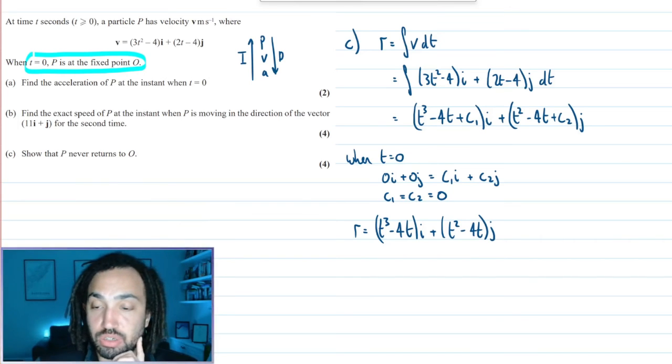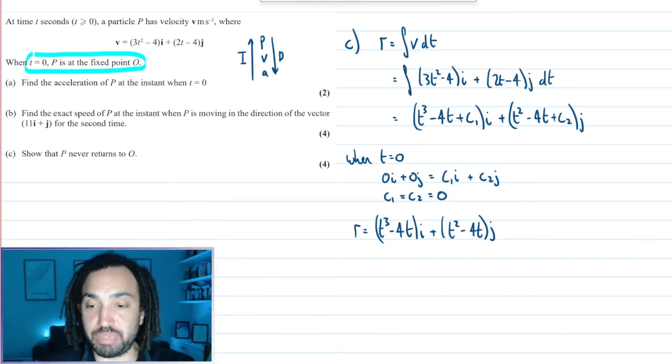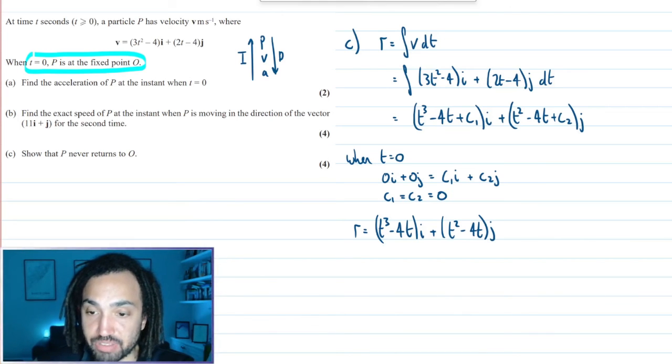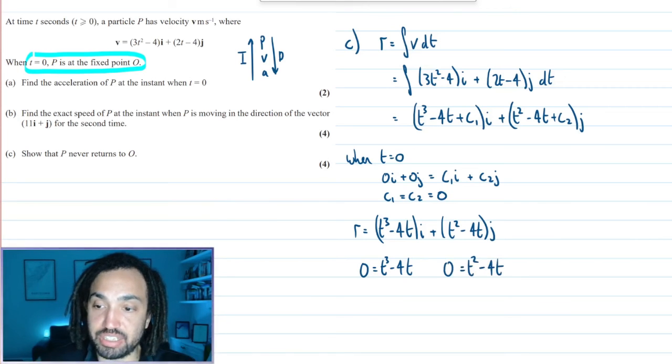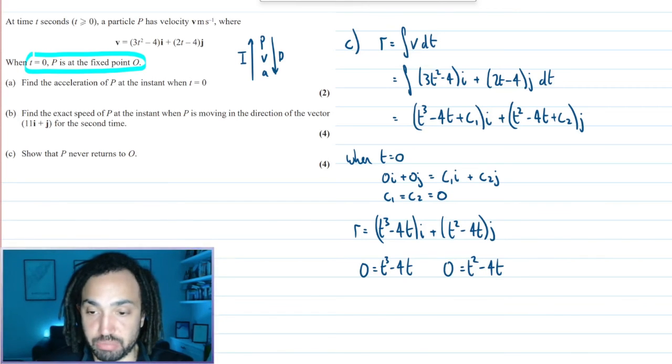Now will it return to the origin? Well, in order for it to be at the origin, it needs to simultaneously have an i component of 0 and a j component of 0.